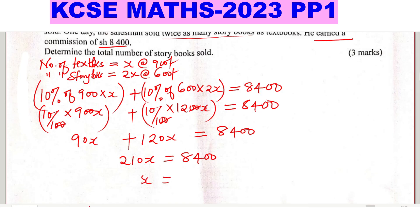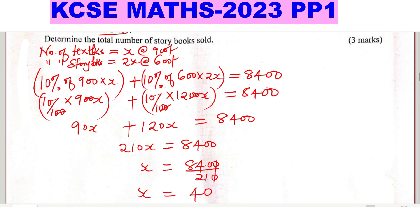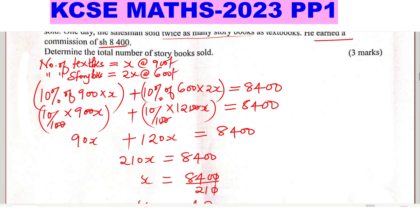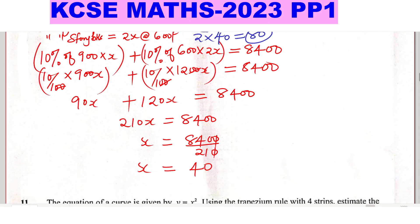Dividing both sides by 210 gives x = 40. Since x was the number of textbooks, the textbooks are 40. The storybooks are twice that: 2 times 40 = 80. So we've answered the question — the number of storybooks sold is 80, because x is 40 and 2x is 40 times 2.